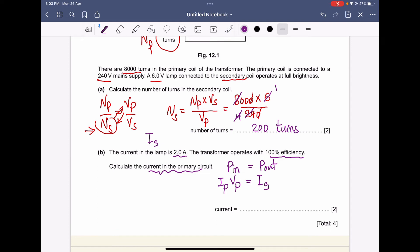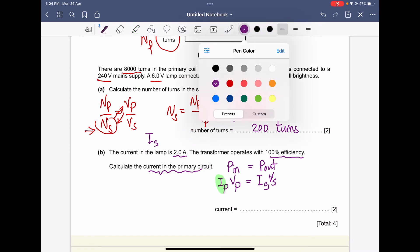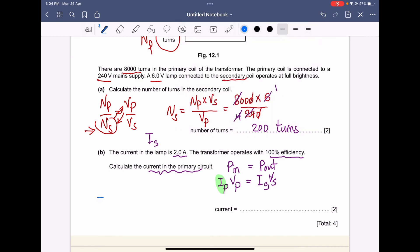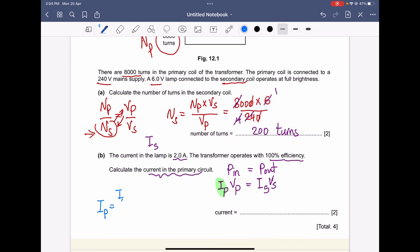I need the Ip. Ip is the unknown. So to get Ip, it's easy. Ip equals Is times Vs divided by Vp.